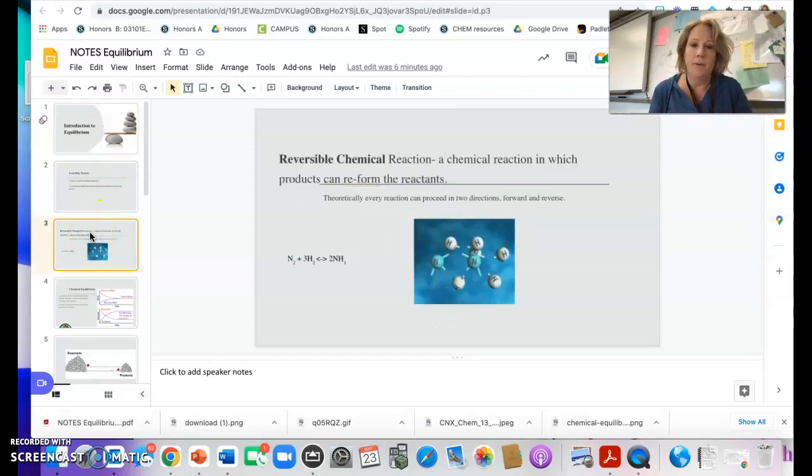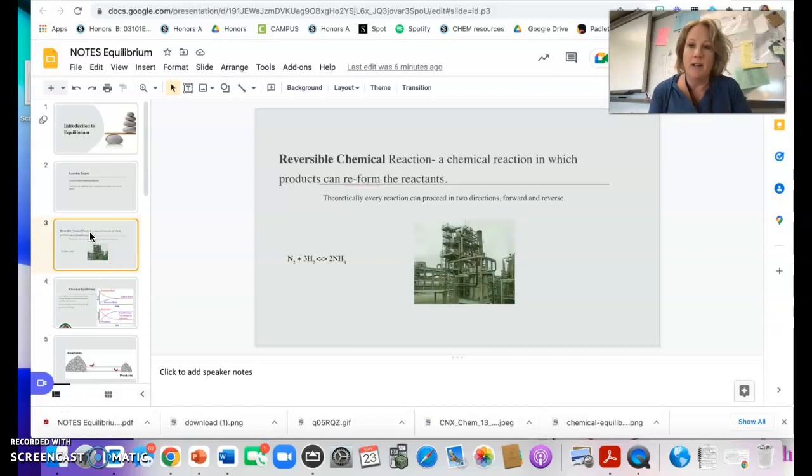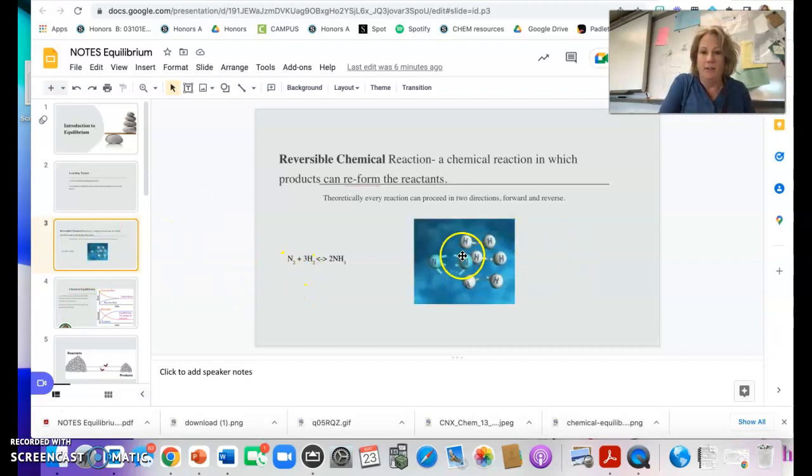So chemical reactions, not all, but a lot of them can be reversible. If you look at this example in the animation that's going with it, the nitrogen and the hydrogen can combine and form the ammonia, NH3. But then, there's your NH3, and it can also break apart and reform the reactants.